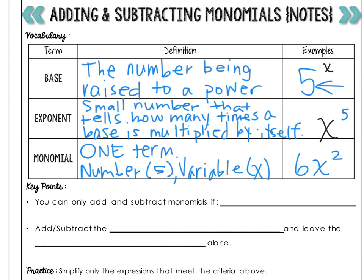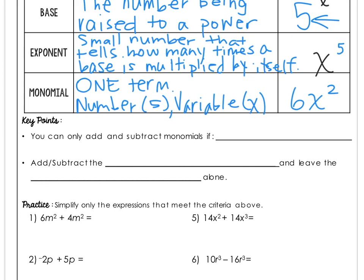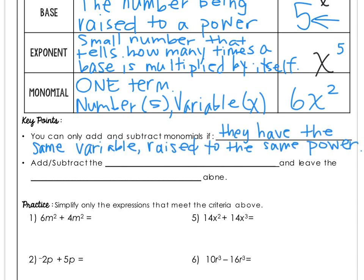A key point is that you can only add and subtract monomials if they have the same variable raised to the same power. Once we get into the examples I'll dive into that a little bit deeper. If they do have the same variable raised to the same power, you're going to add or subtract the coefficients and leave the variable and exponent alone. This is how we combine like terms.